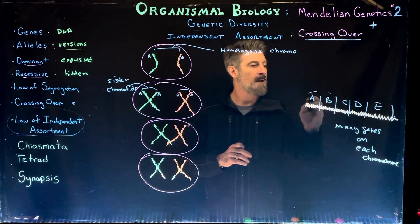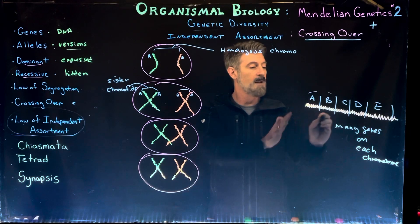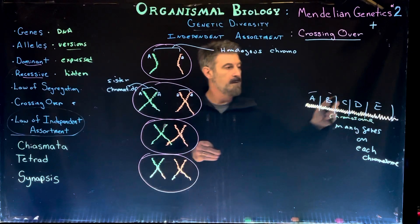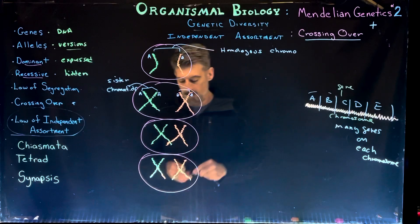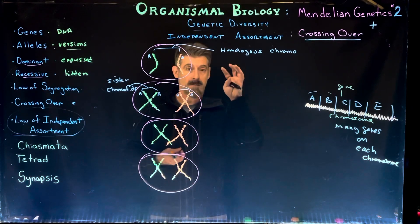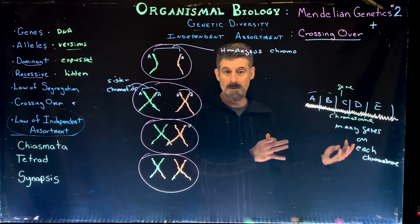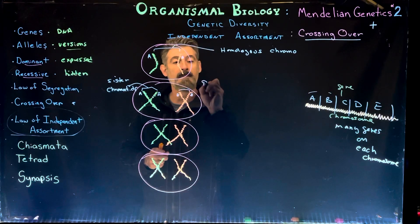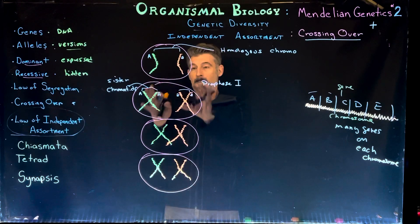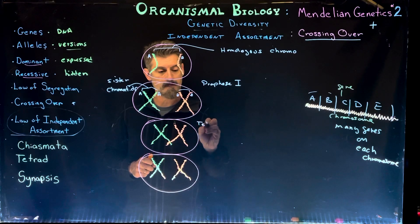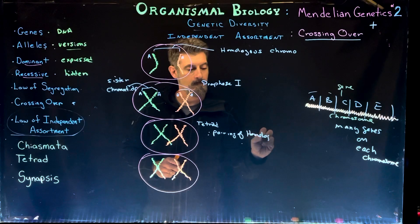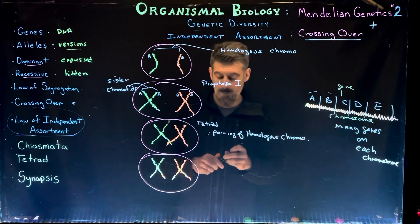What happens to increase genetic diversity and allow independent assortment to occur even for genes on the same chromosome is this process of crossing over. It happens during Prophase 1 and then into Prometaphase. The homologous chromosomes pair up into a structure called a tetrad — that's the pairing of homologous chromosomes, and that's one part of the stages of meiosis.